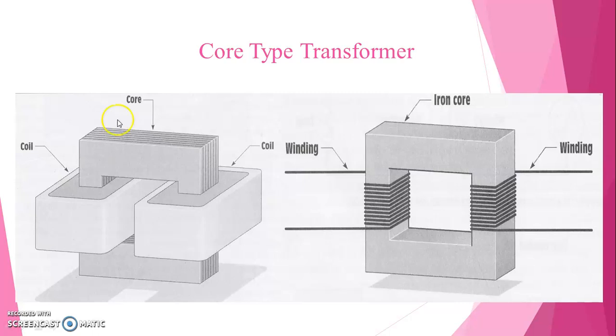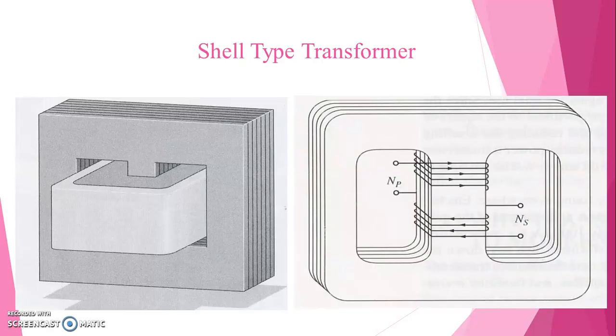Let us consider core type transformer. This is the graphical representation of core type transformer. Look at the diagram. We have windings at two sides. Coil encircles the core. But here core encircles the coil. It is for shell type transformer.